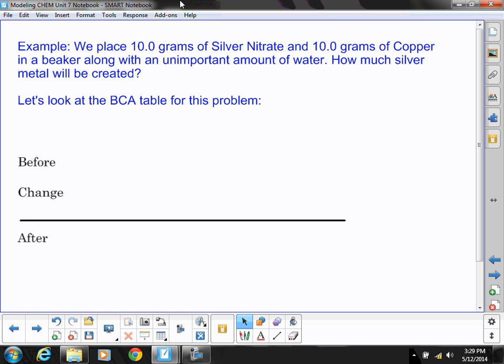So this was the single replacement reaction of silver nitrate with copper metal where the copper replaces silver and ended up with copper nitrate so the solution turned kind of blue in color and then we had silver metal being produced. So the question is how much silver metal will be created?